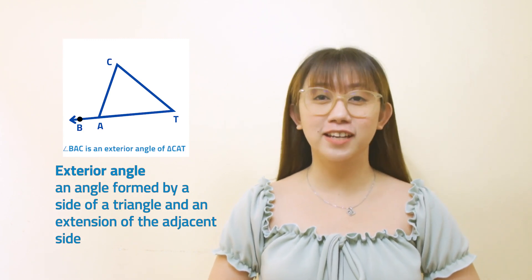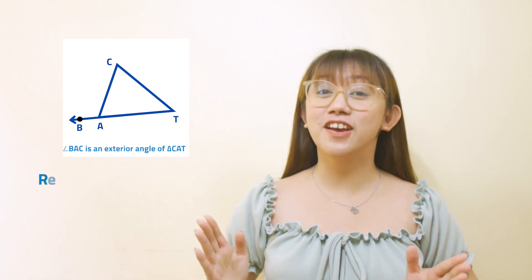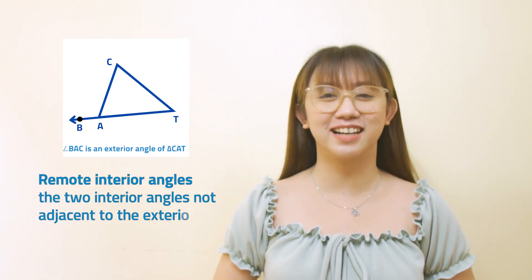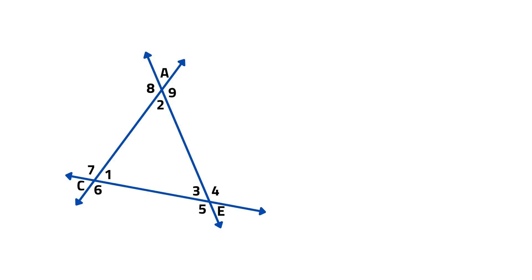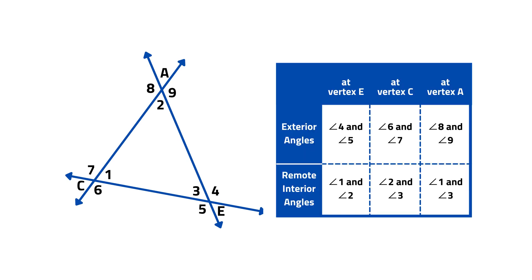The exterior angle and the angle adjacent to it form a linear pair. The other two interior angles not adjacent to the exterior angle are called remote interior angles corresponding to the exterior angle. Consider triangle ACE. The table shows the exterior angles and their corresponding remote interior angles. Exterior angles at vertex E are angle 4 and angle 5. Exterior angles at vertex C are angle 6 and angle 7. Exterior angles at vertex A are angle 8 and angle 9. The remote interior angles at vertex E are angle 1 and angle 2. The remote interior angles at vertex C are angle 2 and angle 3. The remote interior angles at vertex A are angle 1 and angle 3.